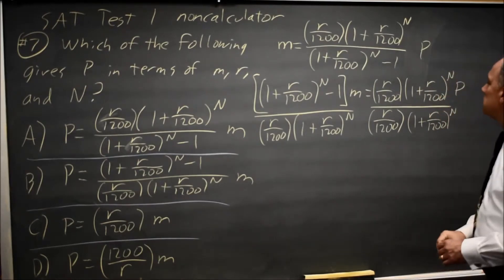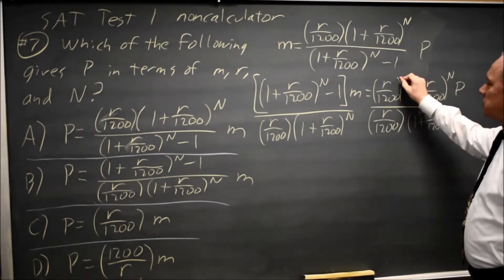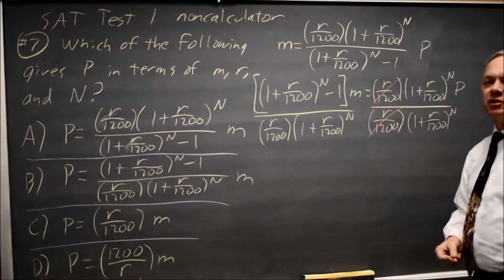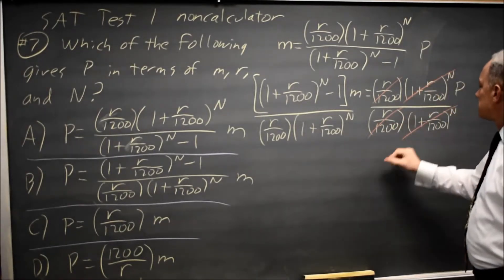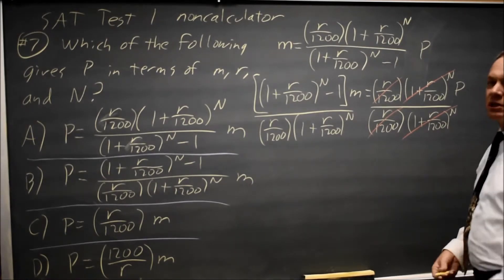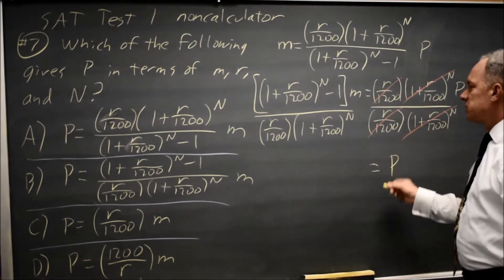This whole expression on the right, other than the P, R over 1200 divided by R over 1200 is 1. 1 plus R over 1200 to the N divided by 1 plus R over 1200 to the N is also 1, so the right hand side is P times 1 is P.